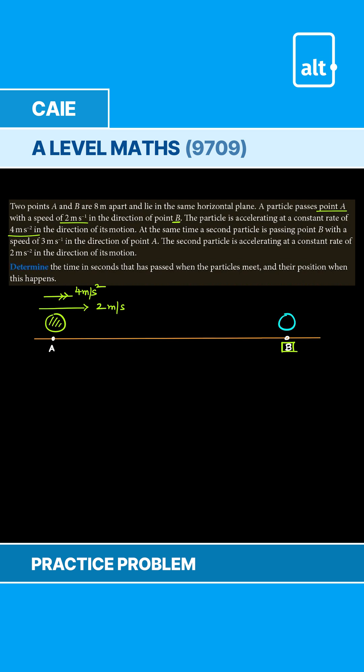Similarly, the other particle which is at B has a speed of 3 meter per second in the direction of point A. So now the particle is traveling in this direction with a speed of 3 meter per second and the acceleration is 2 meter per second square in the same direction.